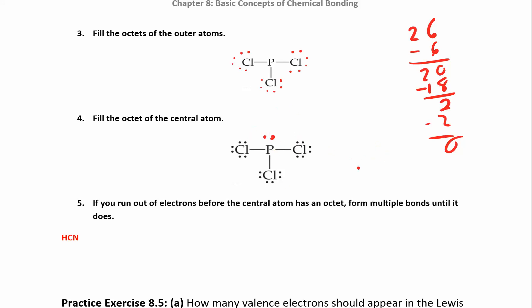Each atom should now have eight electrons around it. You can go back and check: each chlorine has two from the bond plus six as lone pairs, giving eight. Phosphorus has two from each of the three bonds plus the lone pair, giving eight. If you feel like you're double-counting the lines, you are — because they're sharing the electrons. Even though there's only two electrons in a bond, they help satisfy both phosphorus's octet and each chlorine's octet.